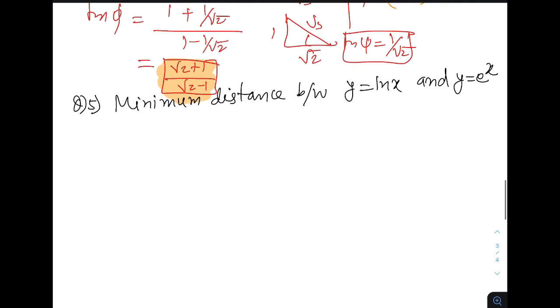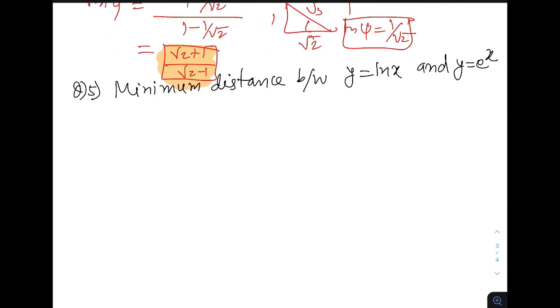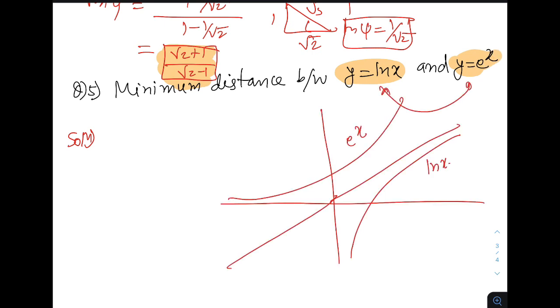Let us move to the next question. The minimum distance between the curve y equal to ln x and y equal to e to the power x. Now again, we can recognize that ln x and e to the power x are inverse of each other. So they are mirror image of each other. The minimum distance between the curve we know from the general theory will occur along the common normal. Now why it should occur on the common normal? Let us see a quick proof from the physics point of view. Imagine these curves are the smooth curve with no friction. It is a frictionless curve. And there is a bead which is sliding over this. Let us join with a spring of a stiffness k.